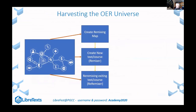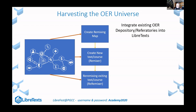Harvesting is the term I use for taking existing OER — subject to its permissions — and integrating it into our platform, the living library you have access to. To do that, the first step is to build a remixing map. We use a technology called the remixer to make it easier to combine, slice, and dice content. This is enabled by the size of our OER content: 300,000 pages of OER within our library. The bigger the library, the easier it is to find what you need without building everything from scratch.